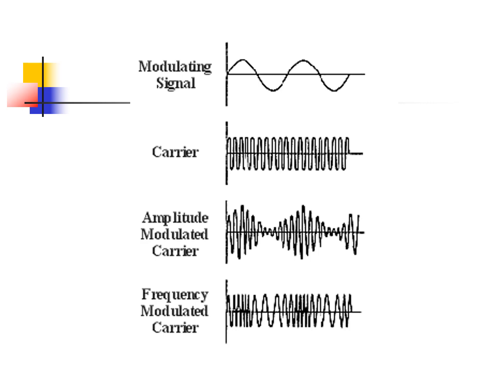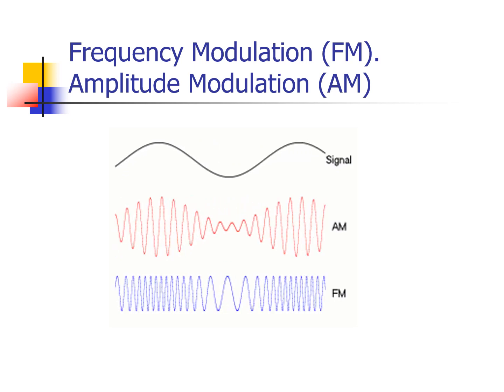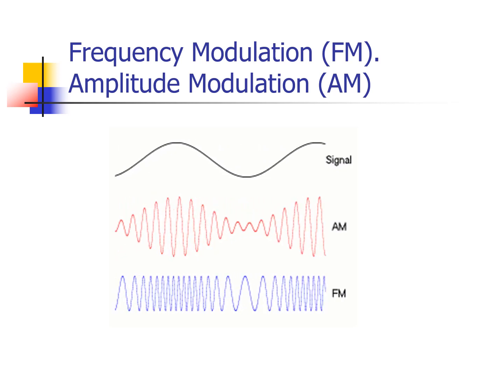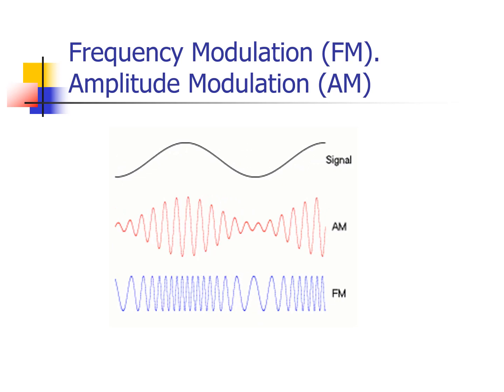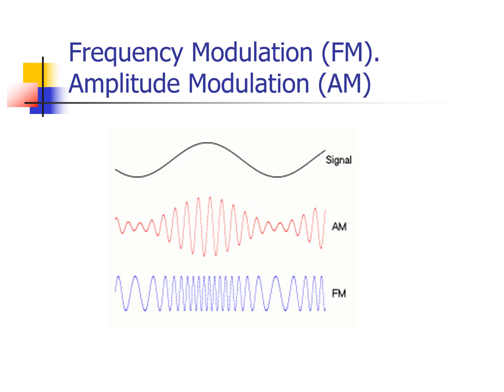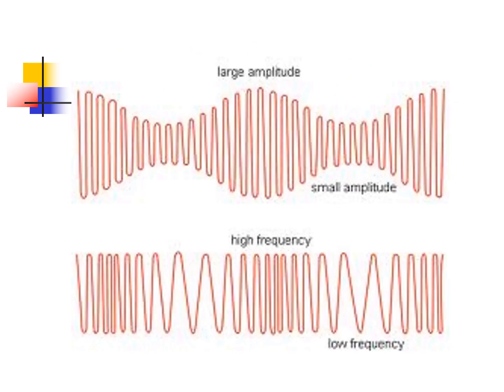There are two types of electromagnetic radio signal carrier: the amplitude modulated carrier, or AM, and the frequency modulated carrier, or FM. As shown in the simulation, amplitude modulation varies in amplitude, so the signal is transmitted by changing amplitude, while frequency modulation is a carrier that changes in frequency. For AM, the signal is transmitted using large or small amplitude, while for FM, the signal is transmitted using high or low frequency.